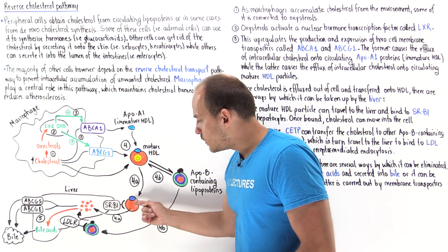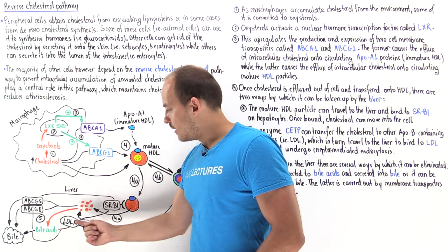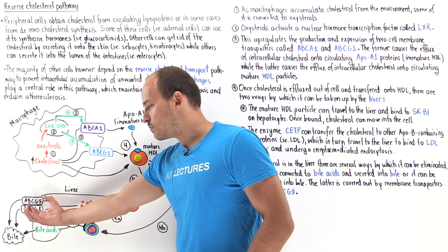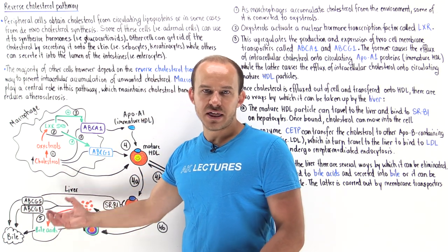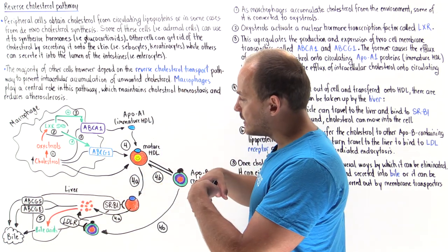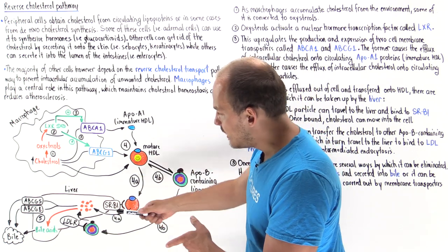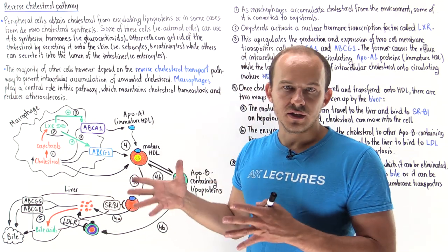So unlike the SRB1 pathway, where only cholesterol moves into the cell, here the entire lipoprotein ends up being absorbed by that hepatocyte. But the result is the same—we increase the levels of cholesterol within the liver cells.